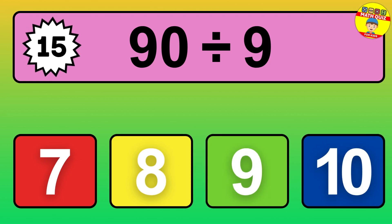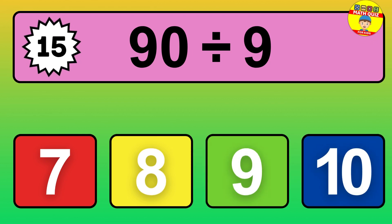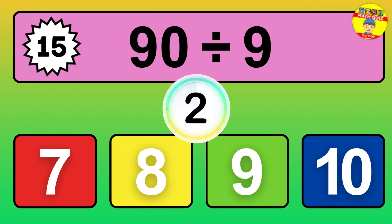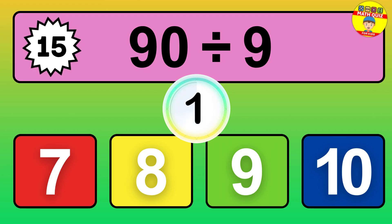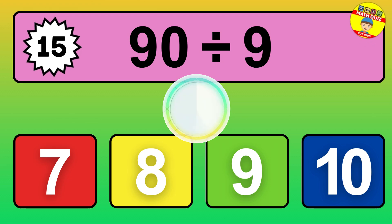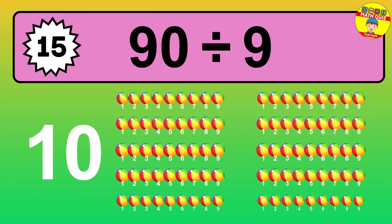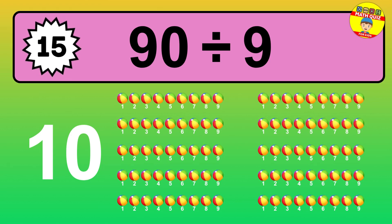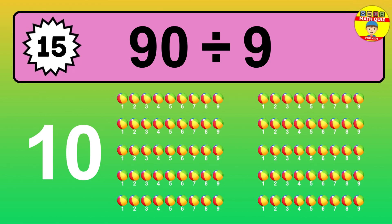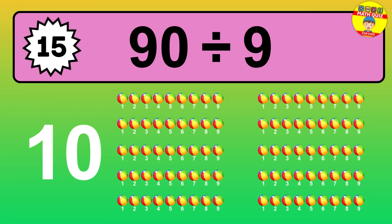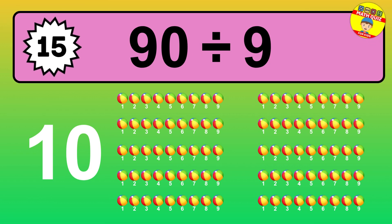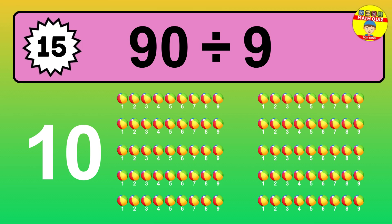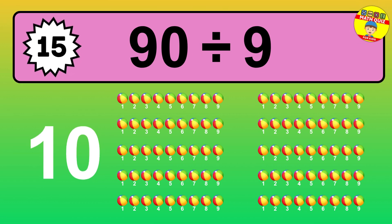What is 90 divided by 9? Picture this: you have 90 objects to divide into groups of 9. How many groups can you make? Let's think about it. Ready to find out? Let's break it down. Let's picture you have 90 objects. How about arranging them into smaller groups where each group consists of 9?